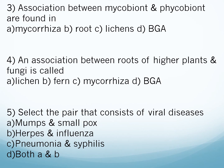Question three: Association between mycobiont and phycobiont is found in — A) mycorrhiza, B) root, C) lichens, D) BGA (blue-green algae). The correct answer is option C — lichens. Question four: An association between roots of higher plants and fungi is called — A) lichens, B) fern, C) mycorrhiza, D) BGA. The correct answer is option C — mycorrhiza.